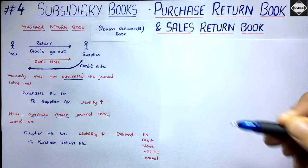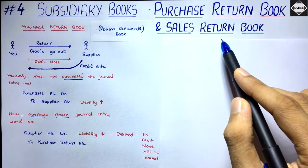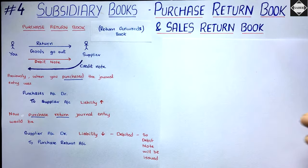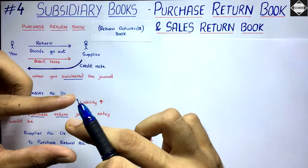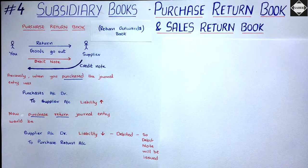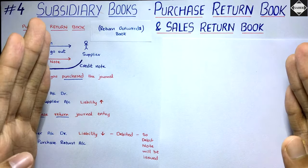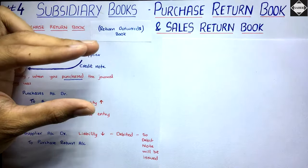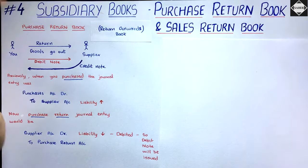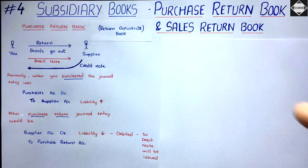Before doing all of that, let's understand a few basic things regarding purchase return and sales return. Purchase return is exactly opposite to purchase account, and sales return is exactly opposite to sales account. So the rules of debit and credit will also be opposite — purchase has debit balance, purchase return will have credit balance; sales has credit balance, sales return will have debit balance.